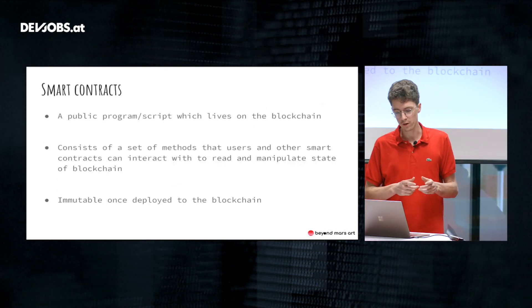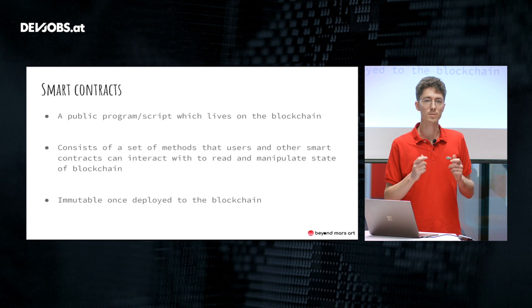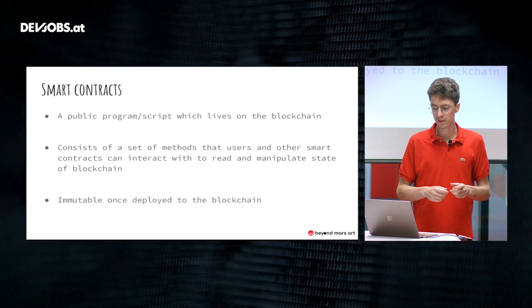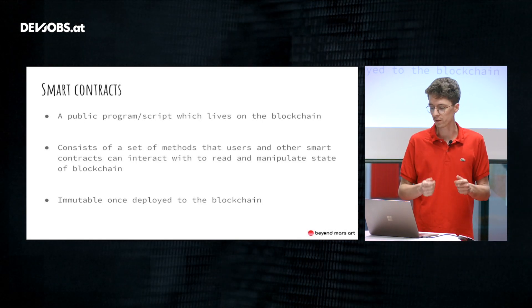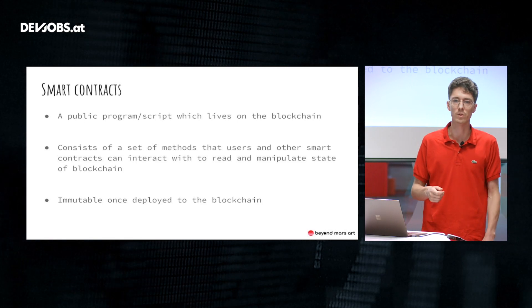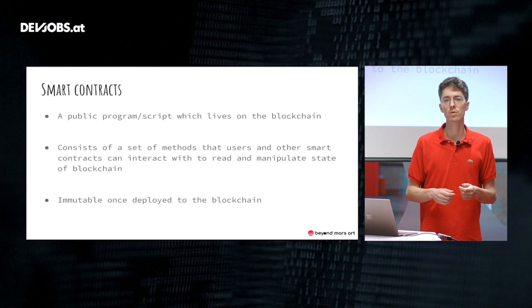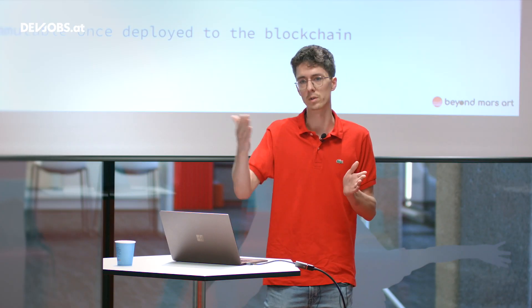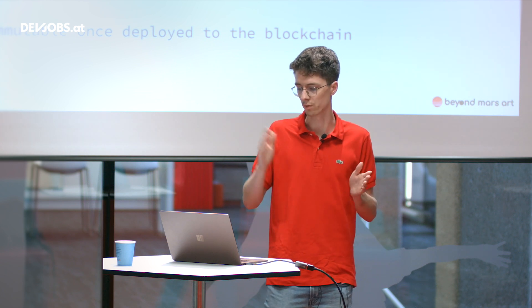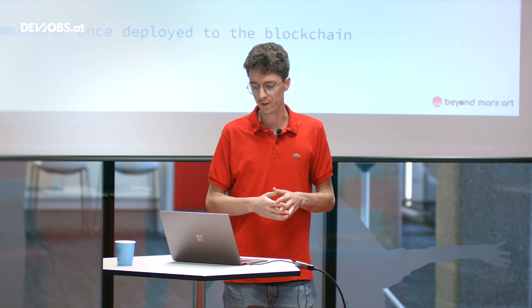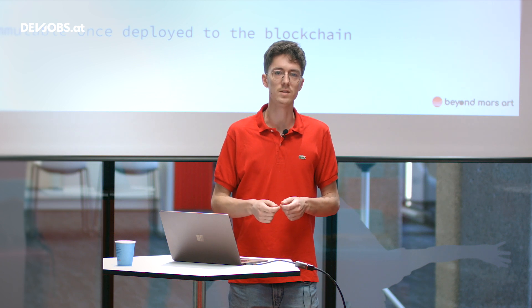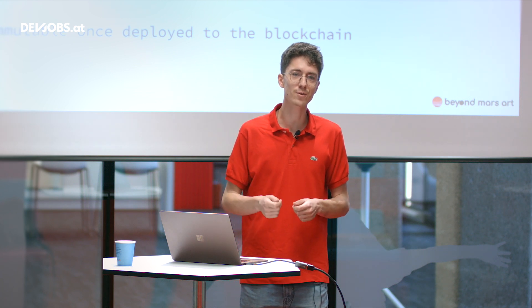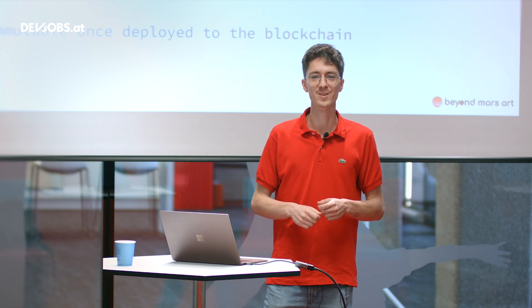Another concept regarding blockchains is the smart contract. A smart contract is a public script which lives on the blockchain. It consists of a bunch of methods that users and other smart contracts can interact with — to either read states from the blockchain, or to mutate and manipulate state. For instance, if you do a transaction and transfer tokens from owner A to owner B, you manipulate the state. An interesting fact: the code of a smart contract is immutable once you deploy it to the blockchain, so you have to get the code right the first time.